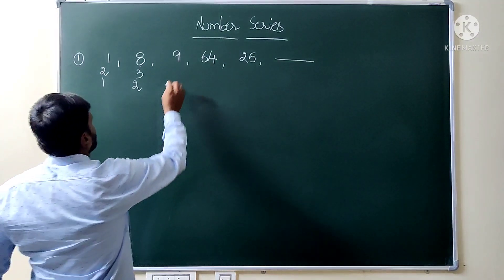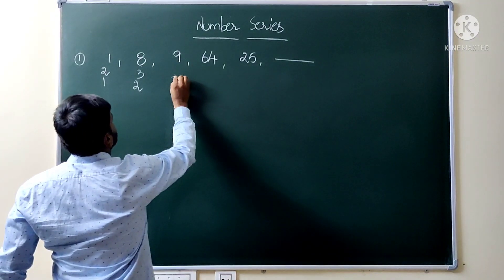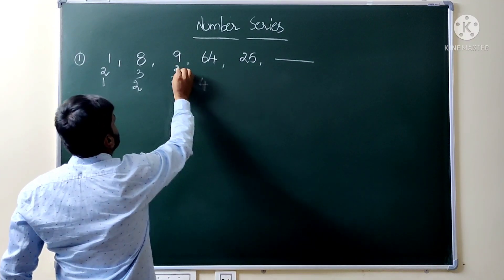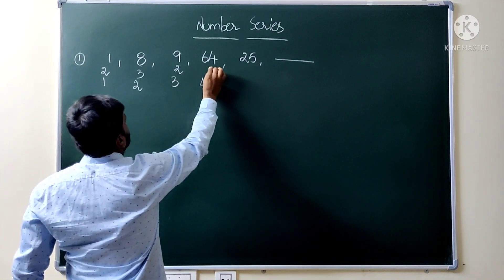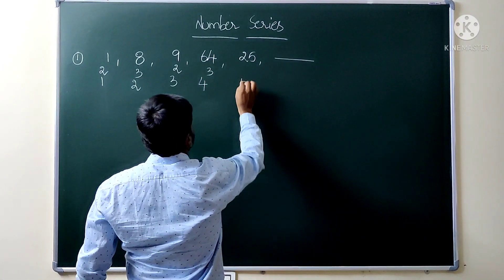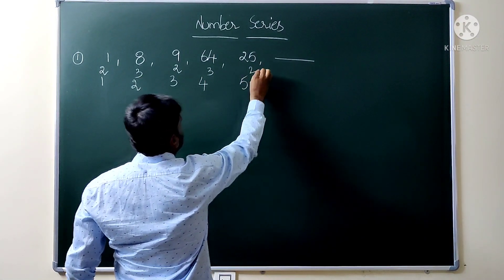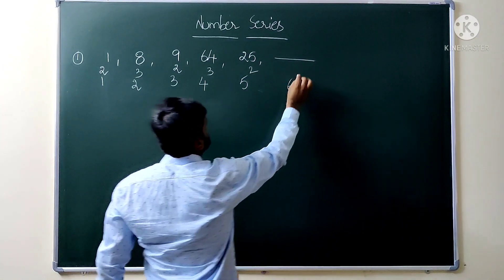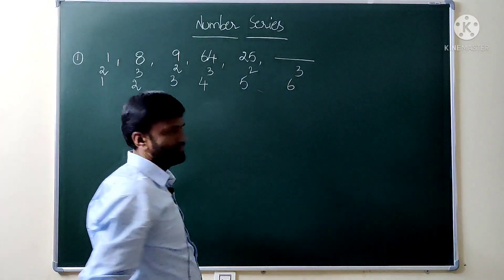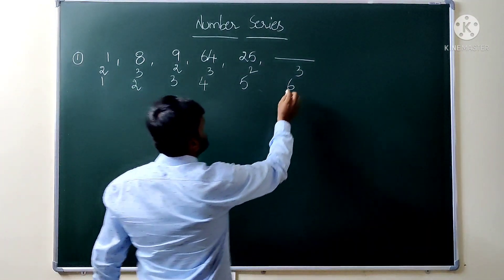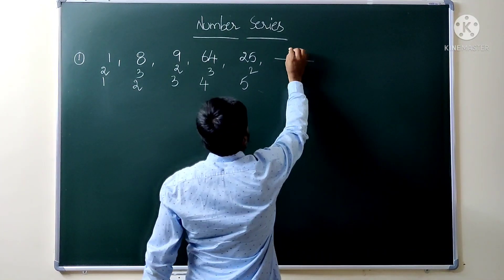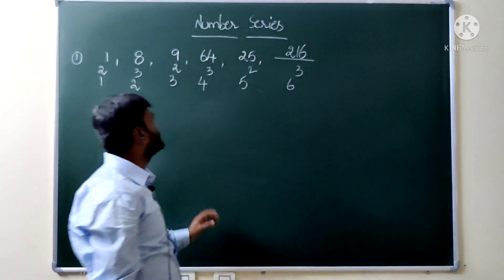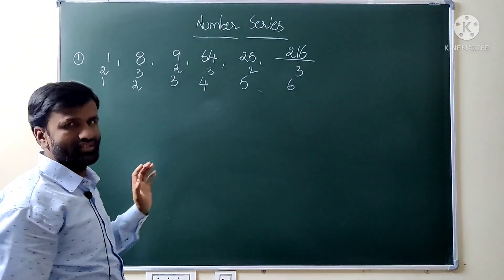Continuing: 9 is 3 squared, then 4 cubed is 64, then 5 squared is 25, then 6 squared, then 6 cubed. So 6 cubed is 216. Therefore, the answer to question 1 is 216.